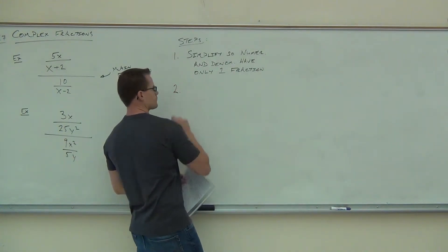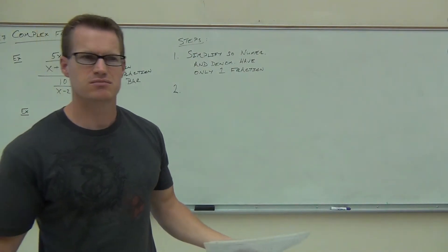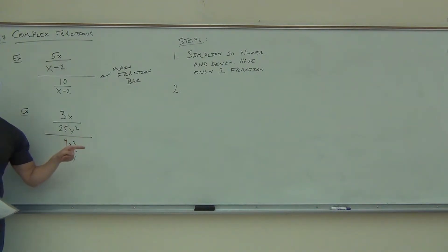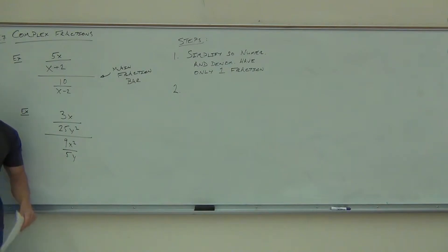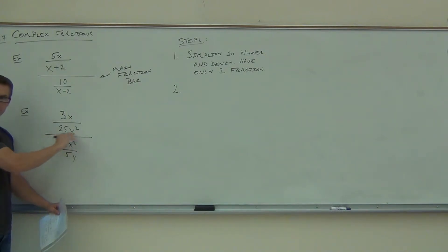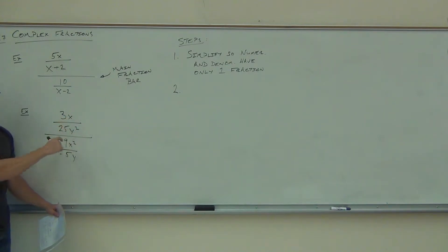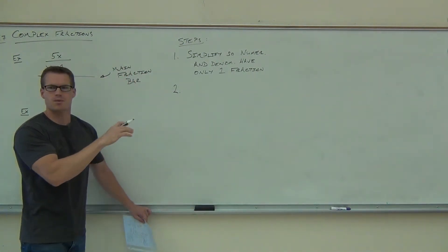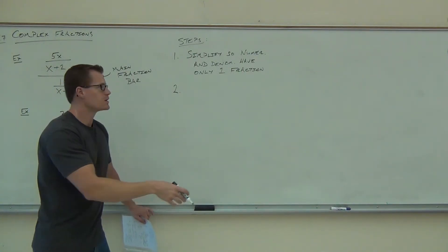Here's the whole deal. What operation does a fraction signify? Division — that's right. So what we know about fractions is that our main fraction bar also stands for division. So if this is 3x over 25y² over 9x² over 5y, this really means 3x over 25y² divided by 9x² over 5y. We can set up a division problem. A complex fraction is just a fancy way to say you have a division problem. Step 2 is: set up a division problem.